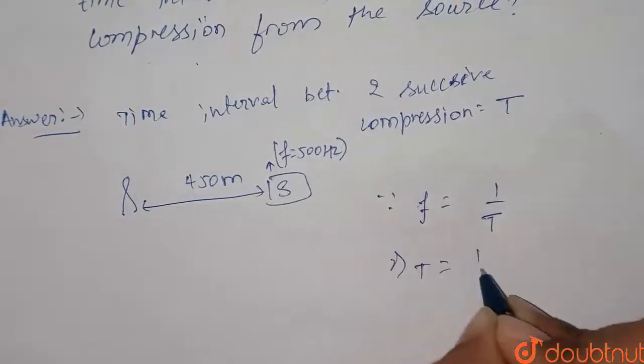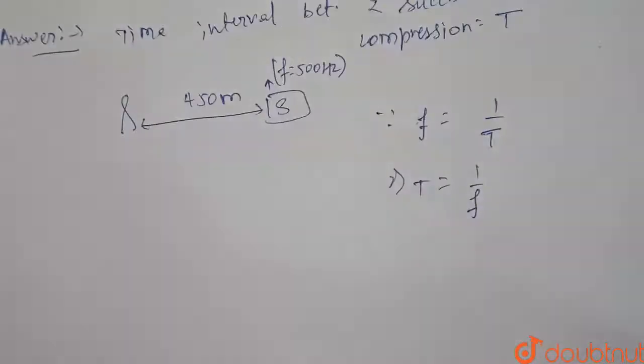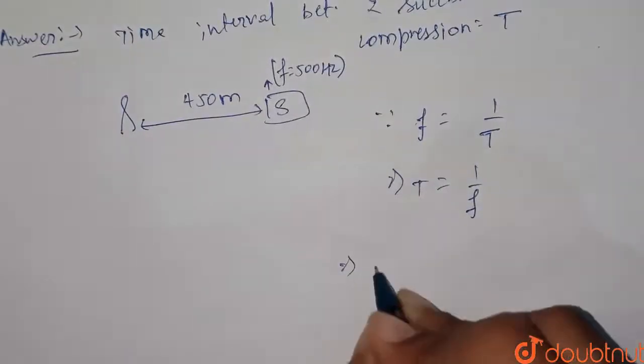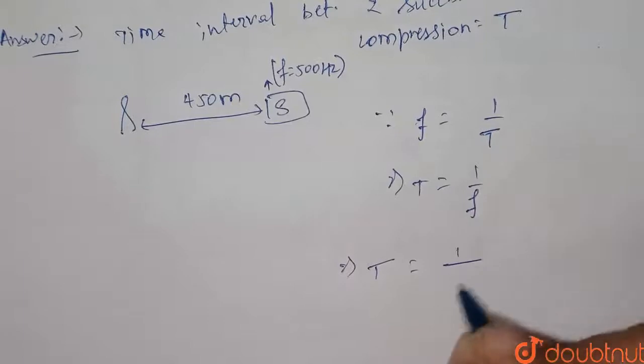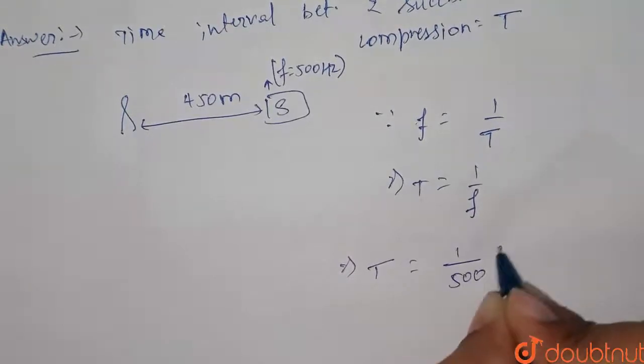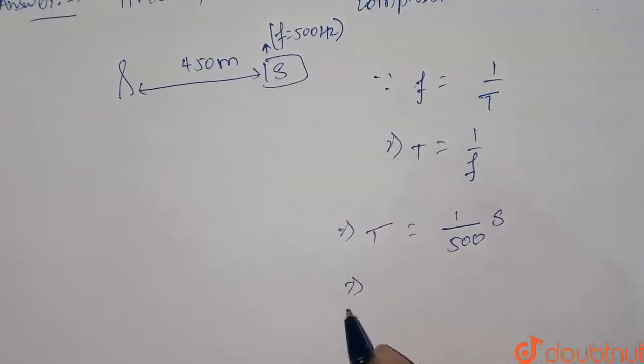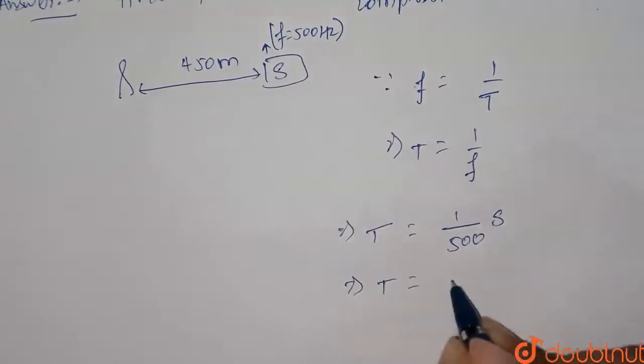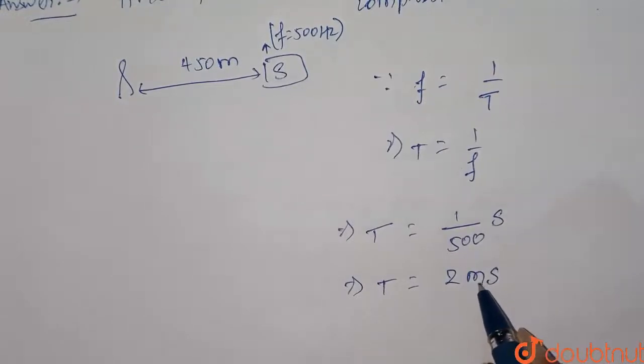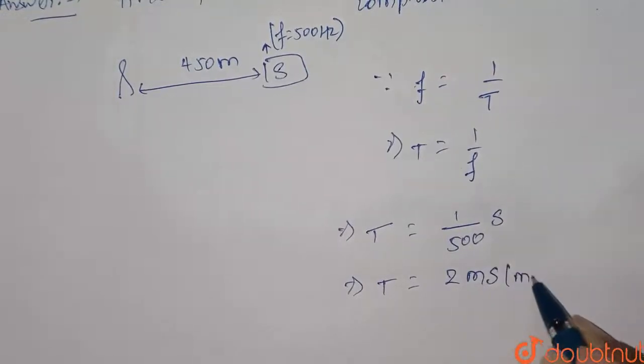we get time period equal to 1 by f. And thus, we get time period equal to 1 by 500 second, and this will be equal to time period equal to 2 millisecond actually. This M is not for meter, this is millisecond.